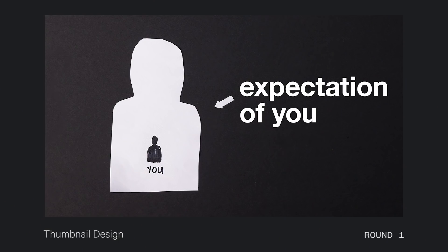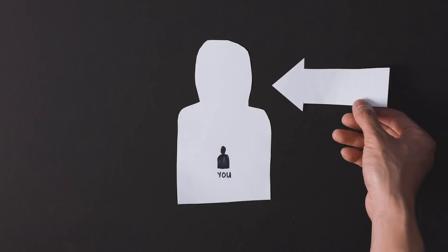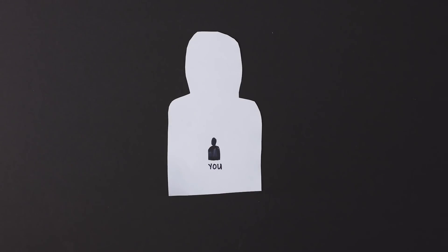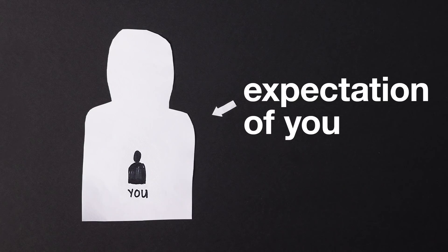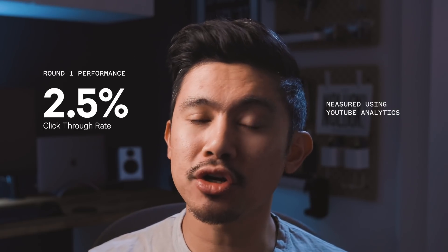For the first version of the thumbnail, I created this image. To make it stand out, I took a practical analog approach using cutout papers and crude drawings to give it a handmade feel. I wanted it to look very different from the normally bright and saturated thumbnails you'd see on YouTube. The idea was to take the normal version of you, illustrated by the figure in the center, juxtaposed against a larger white silhouette representing the higher expectation of you. I released the video using this thumbnail and it had a 2.5% click-through rate on YouTube, which is fairly average on our channel. I wasn't satisfied with that result, so I wanted to see if I could design a different thumbnail that would improve the click-through rate.